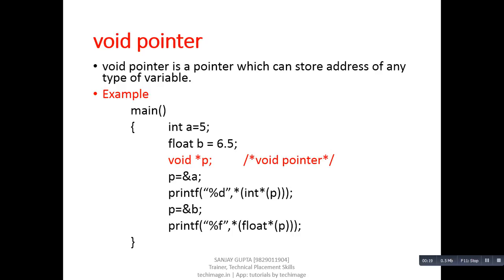If we want to store the address of a float variable, then we have to declare a float pointer, and so on. But void is a special pointer which can store the address of any type of variable.